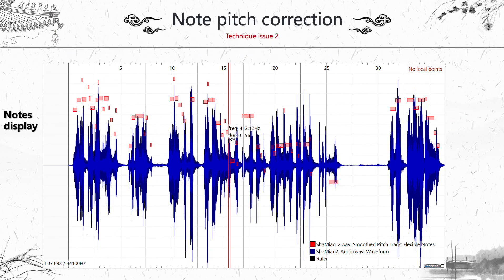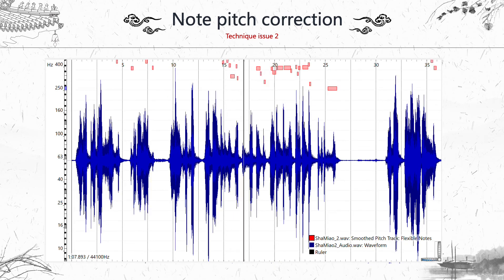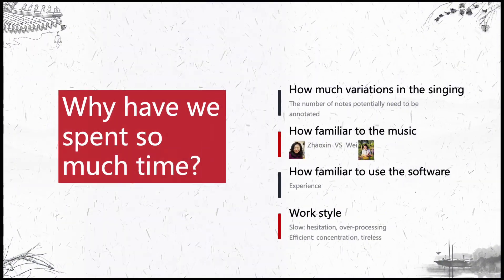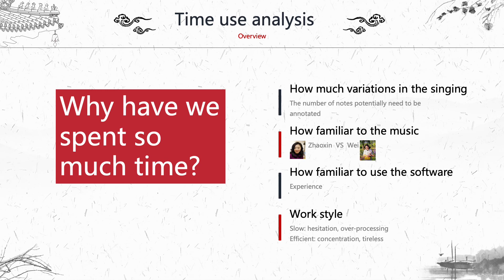The second technical issue in the note pitch correction stage is note display. When we need to adjust the pitch of a note, we need to get the notes from the tuner and import them into the Sonic Visualiser. But sometimes the notes go out of the range of the window, which is very annoying, and we didn't know how to fix it.